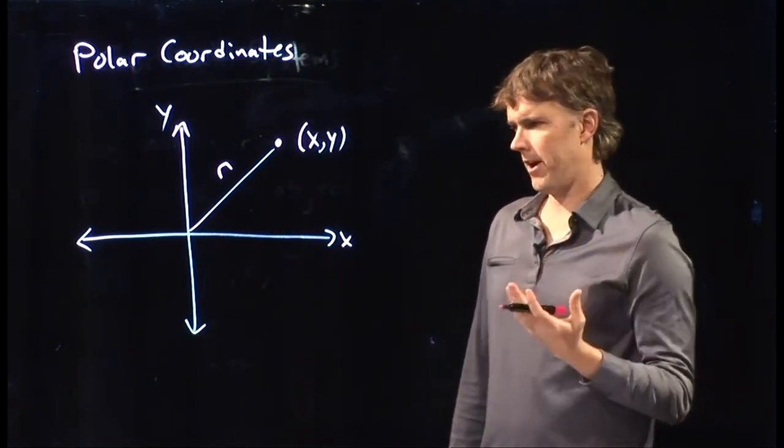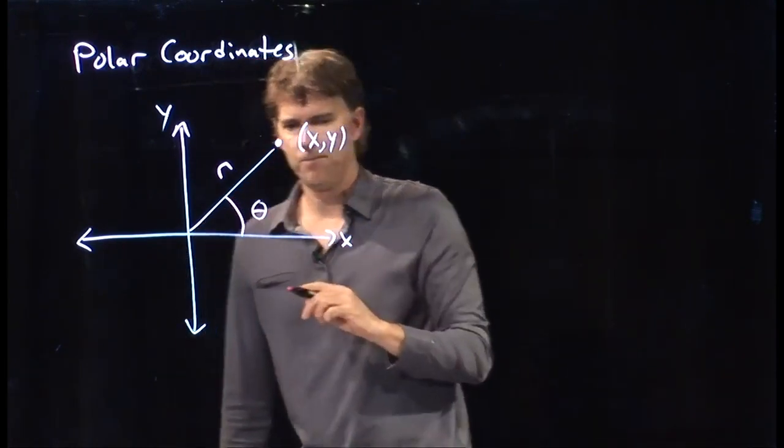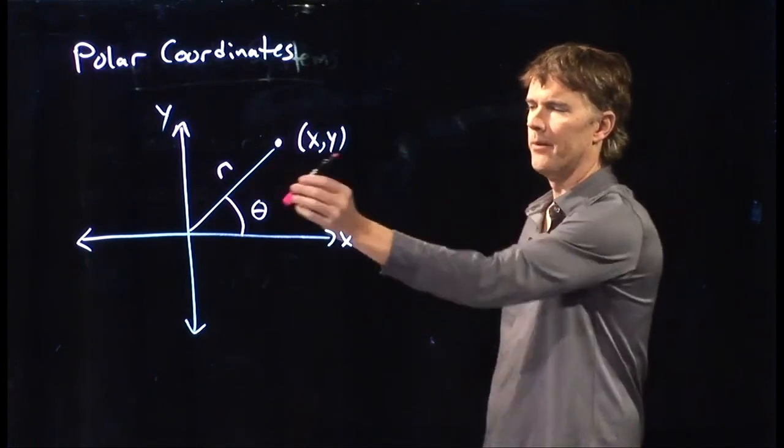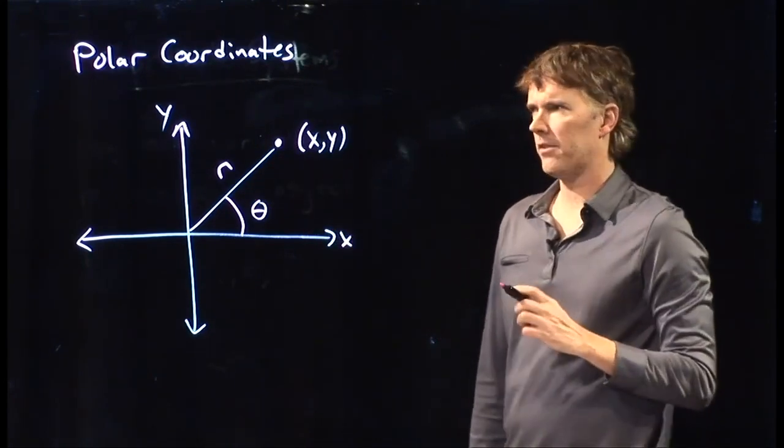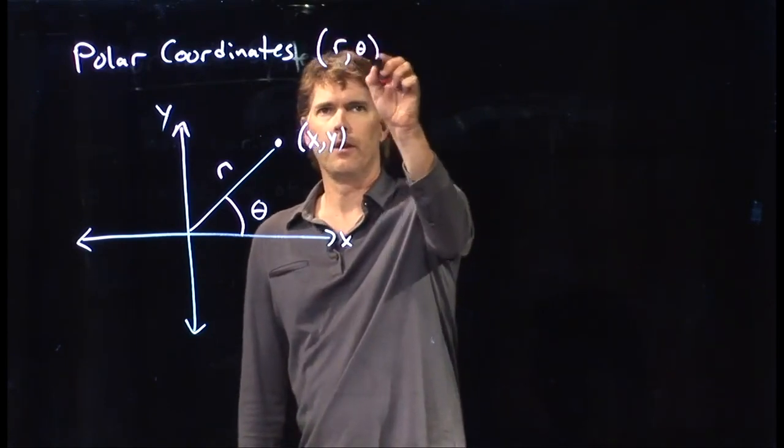So we need one more variable and the variable that we're going to use is theta. What's the orientation of that line with respect to the x-axis? And so these are called polar coordinates, r and theta.